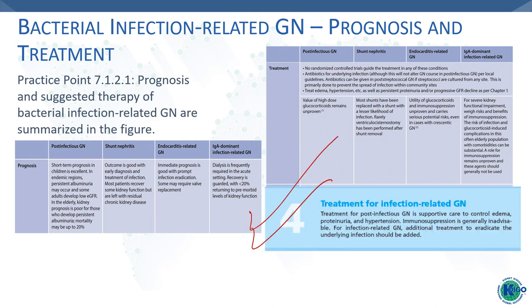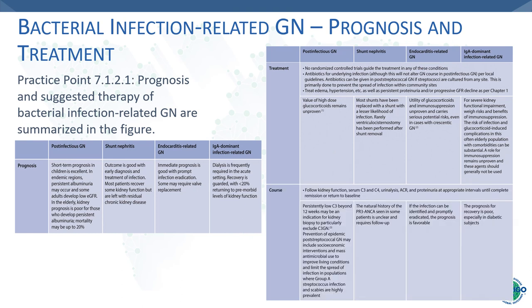Treatment of infection-related GN: general measures include control of edema, proteinuria, and hypertension. Immunosuppression is generally inadvisable. It is sufficient to eradicate the infection with antibiotics and removal of foreign bodies. In infective endocarditis, some patients may need valve replacement. Avoid immunosuppression; use antibiotics. You have to follow up your patient.